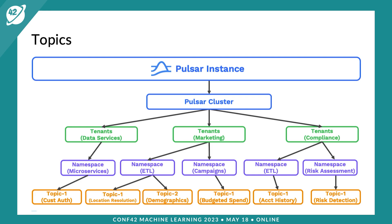At the bottom of all Pulsar communications are topics, like any other messaging system. Unlike other messaging systems, Pulsar has a three-tier URI for each topic. A topic exists within a tenant — Pulsar is a multi-tenant system natively out of the box, a differentiating feature. Different departments within your organization can share the same logical cluster while being logically isolated. Under tenants exists the concept of namespaces, a logical grouping of topics with similar policy requirements around security, data retention, or tiered storage offloading. Topics sit at the bottom, and producers and consumers address them using the full tenant, namespace, and topic path.